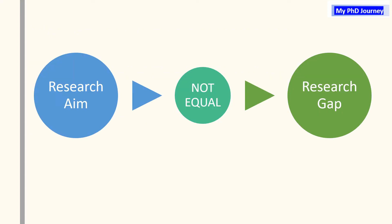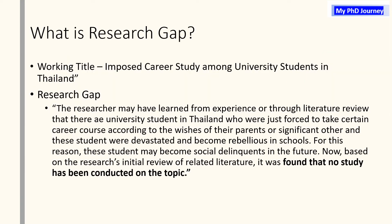To illustrate that a research aim is not equal to a research gap, consider this example. Working title: Imposed Career Study Among University Students in Thailand. Research gap: The researcher may have learned from experience or through a literature review that there are university students in Thailand who were forced to take certain career courses according to the wishes of their parents or significant others, and these students were devastated and became rebellious in school.